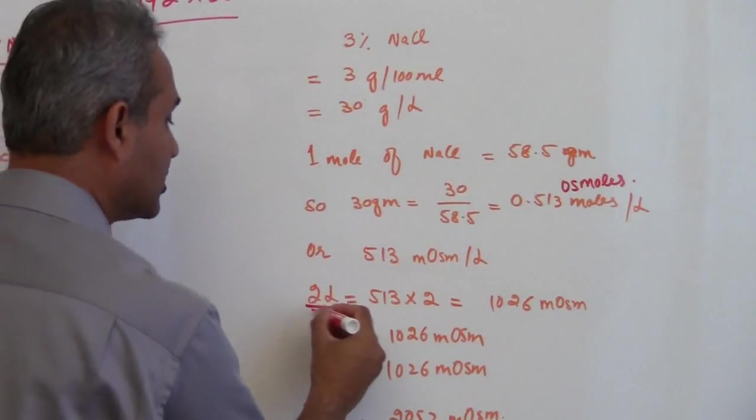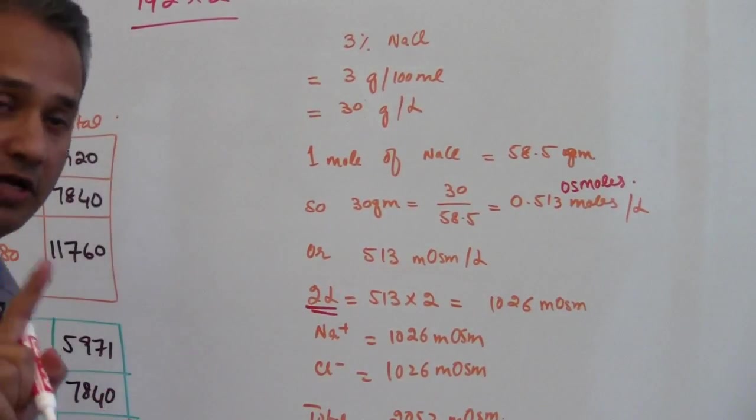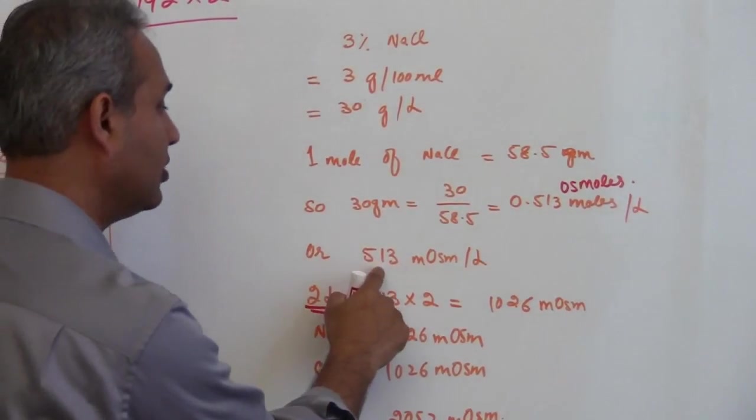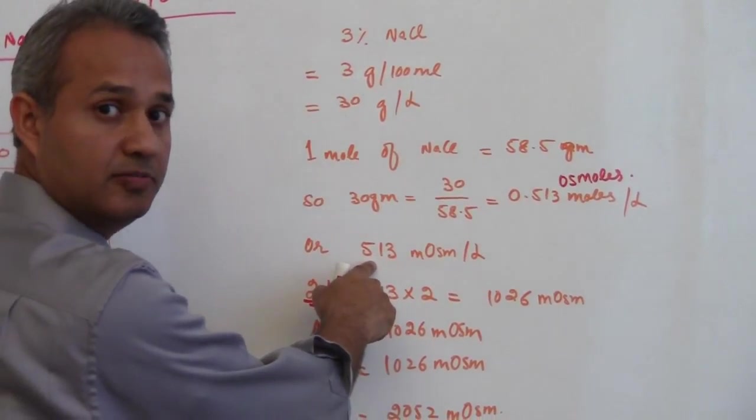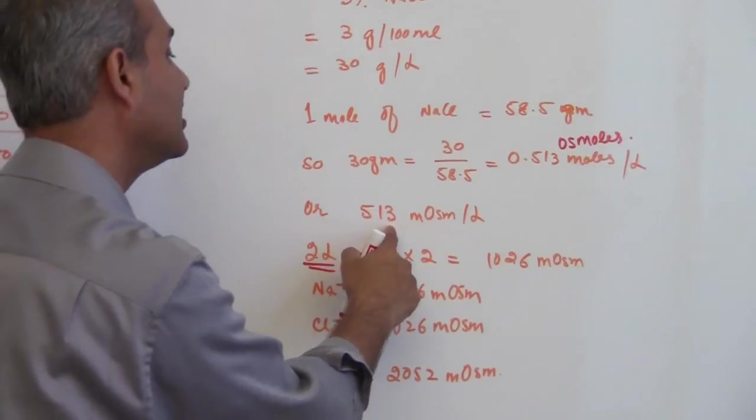Now we know that we have 2 liter of fluid instead of 1, so that means we need to double this number up because this is 513 milliosmol per liter.